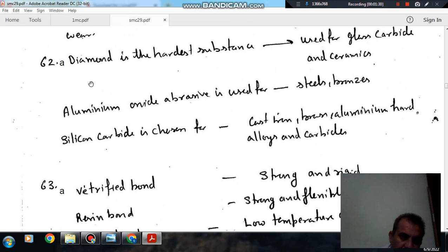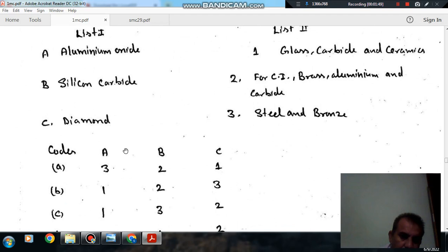So let us see the explanation. Diamond is the hardest option known and used for glass, carbide and ceramic. And aluminum oxide is used for steel and bronze. And silicon carbide is used for cast iron, bronze, brass, aluminum, hard alloys and carbide. So answer is option A. So answer to question number 62 is A.